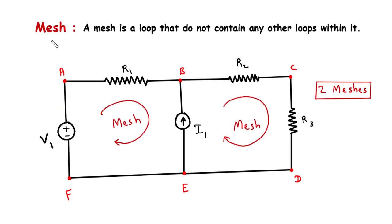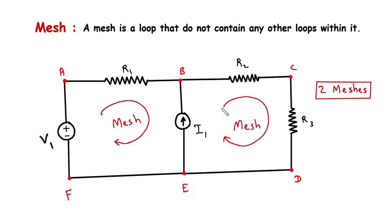Then next is mesh. A mesh is a loop that does not contain any other loops within it. So here we can see in this circuit there are total 2 meshes. This is a mesh and this is a mesh. The path A, B, E, F, A forms mesh 1, and the path B, C, D, E, B forms mesh 2.